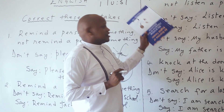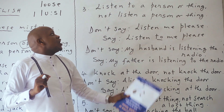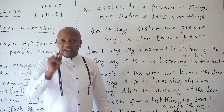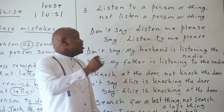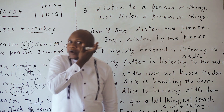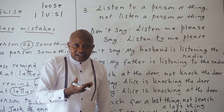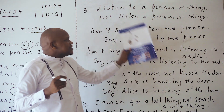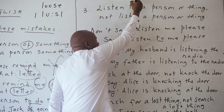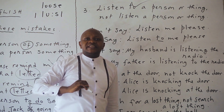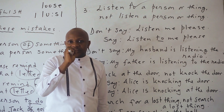Number three: we say 'listen to a person or a thing.' Listen to a person, or listen to something. We listen to a person, to someone, or we listen to something. But we don't say 'listen a person' — you should include 'to.' If you want to speak English very fluently, include these two words.